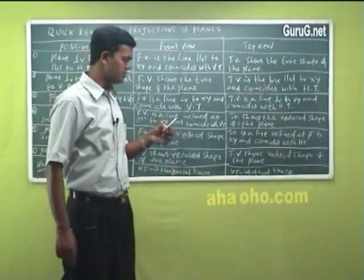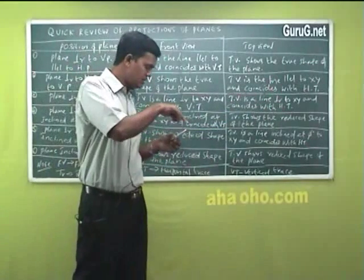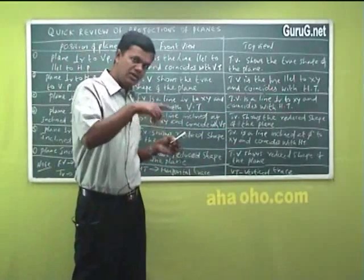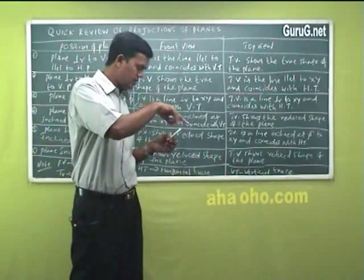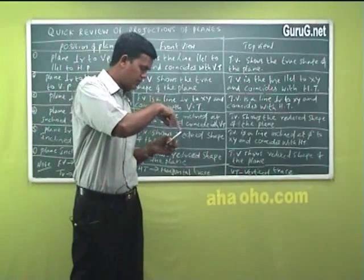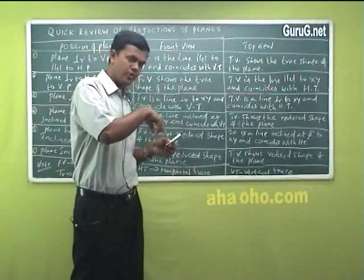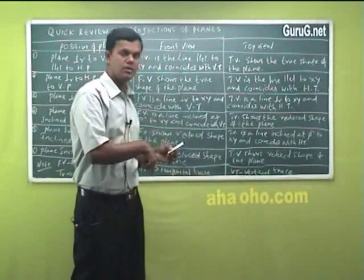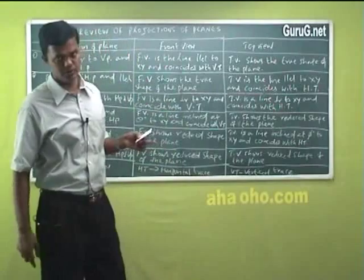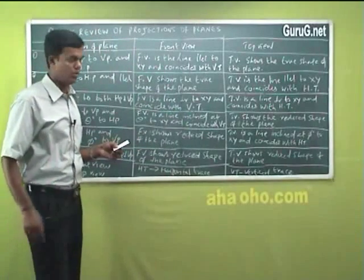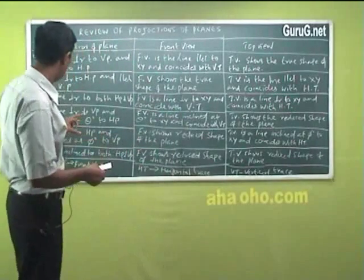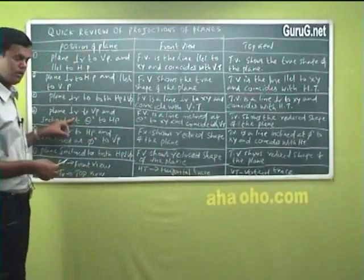For condition four, the top view shows the true shape of the plane. You see all four points and draw the full shape — a true shape of the body. That is condition number four.